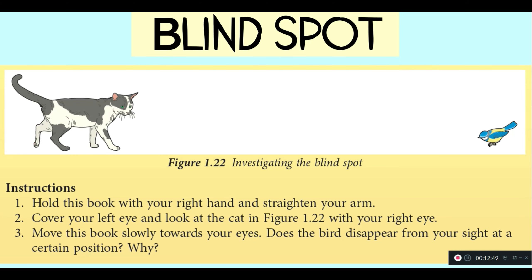Now, let's investigate the blind spot. This image is taken from your textbook. First, if you have your textbook with you, hold your textbook with your right hand and straighten your arm. Then, cover your left eye and look at the cat with your right eye.